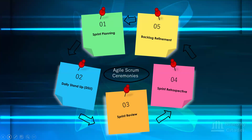Number five: Backlog Refinement — this is the process of breaking down and further defining your product backlog items into smaller chunks. These are the five agile scrum ceremonies observed during sprints in agile.